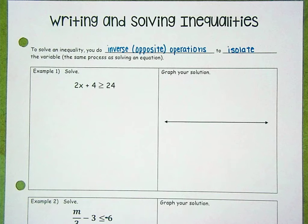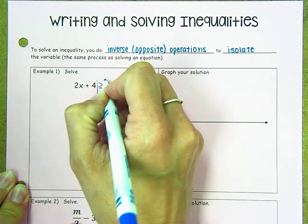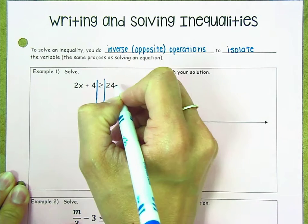So we are going to use inverse or opposite operations to isolate the variable, which means get the variable by itself, which is the same process we use to solve an equation. I'm going to draw my lines around my inequality symbol. So we've got 2x + 4 is greater than or equal to 24.